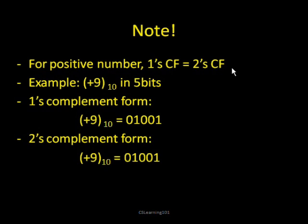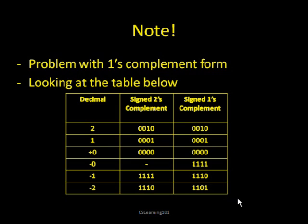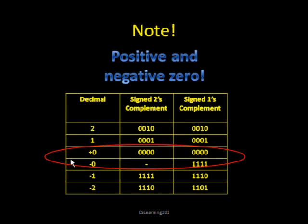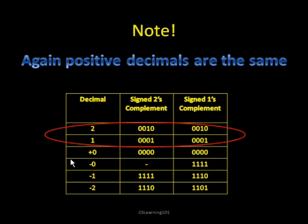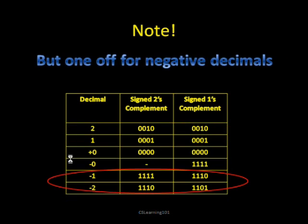For a positive number, the 1's complement is always equal to the 2's complement — because it's positive, you don't have to convert it to a negative number. Now, there is a problem with the 1's complement method. If you look at the chart, the numbers look okay until you get to 0 — in 1's complement, there is both a positive 0 and a negative 0. That's not right; 0 should always equal 0. That's why the 2's complement form was made. If you add 1 to the negative 0 in 1's complement, you would get positive 0 — so there's only one type of 0 in 2's complement. Note that the positive numbers are the same, but the negative decimals are one off.